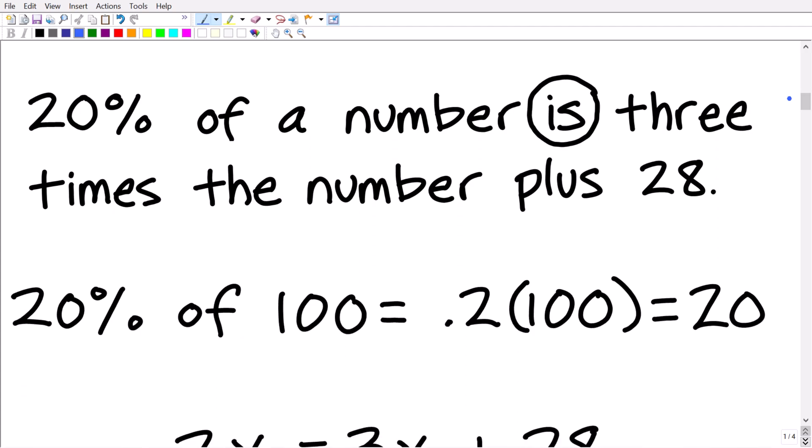Okay, so here again is our problem. 20% of a number is. So I've got this circled here because anytime you see the word 'is' in a math problem, a math word problem, you want to be thinking about the equal sign. So what we're saying is 20% of some number is equal to or is three times the number plus 28.